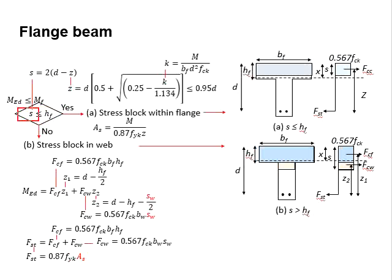The parameter s refers to the height of the stress block. It is determined as a function of the lever arm and depth of the beam. The lever arm z is determined from standard equations, where k represents the moment divided by bf·d²·fck.